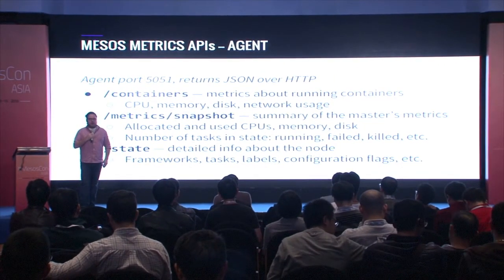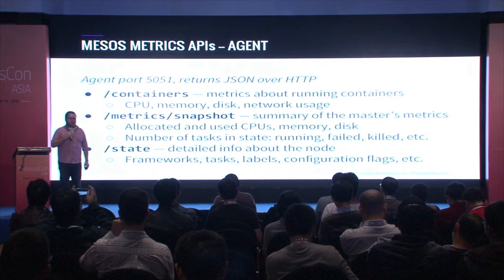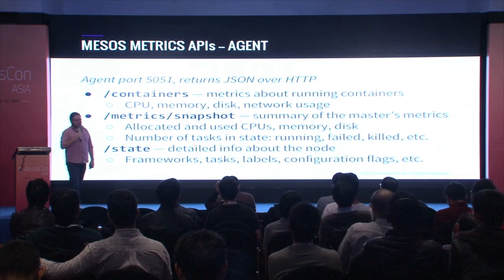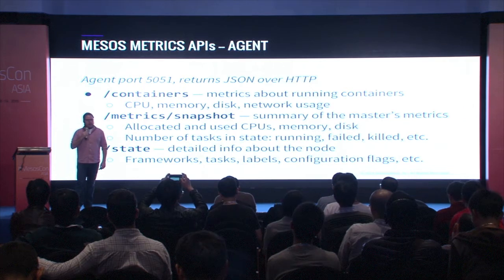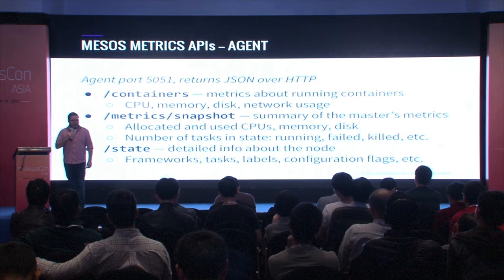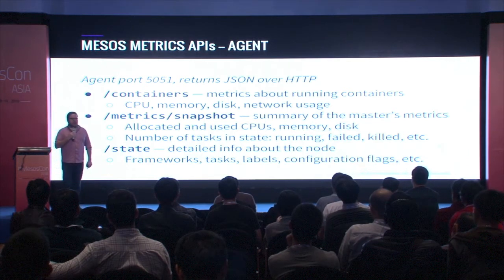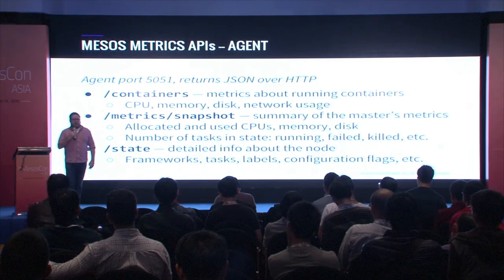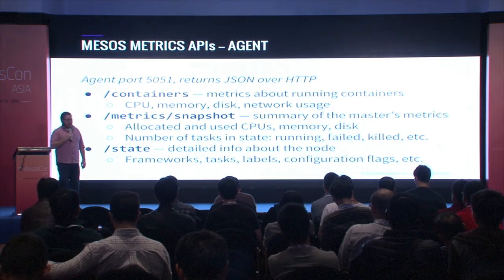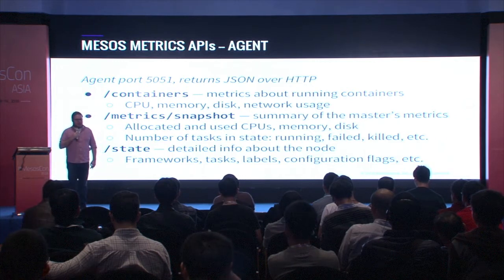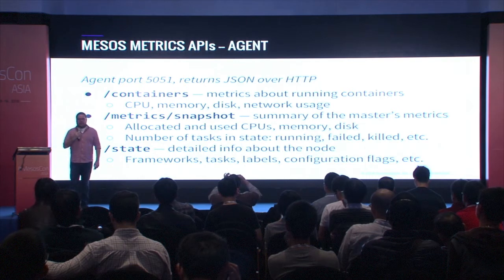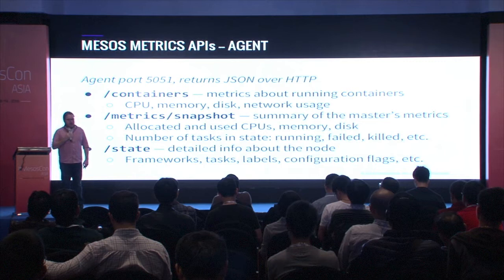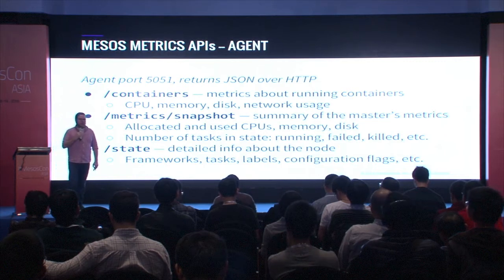That was just the master — the three, five, or seven machines making up the master quorum. On the agent, on port 5051, there are a few different endpoints. Specifically, there's the new containers endpoint that came out in Mesos 1.0 or possibly 0.28, providing metrics about running containers: container IDs, CPU, memory, disk usage, etc. This used to be available at the executor level, but now you can query it for individual containers. Just like on the master, the metrics snapshot endpoint provides the agent's metrics: number of tasks, their states (running, failed, staging), used CPUs, allocated memory, etc. All of this is returned via JSON over HTTP.